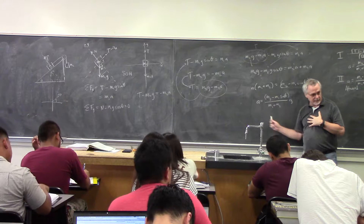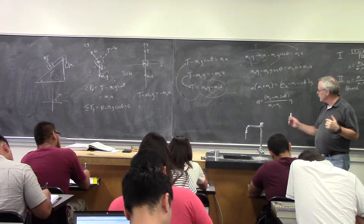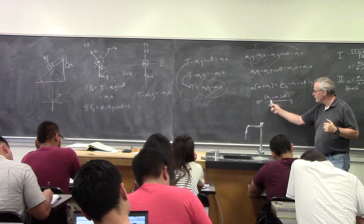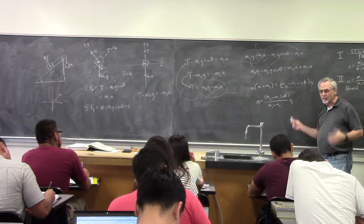I should have units of acceleration, and g is an acceleration, so whatever units are in the numerator, I need the same units in the denominator. And I've got mass, mass, mass, mass — all those units will cancel. So that's looking favorable.